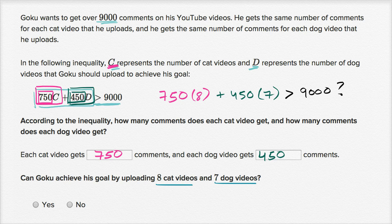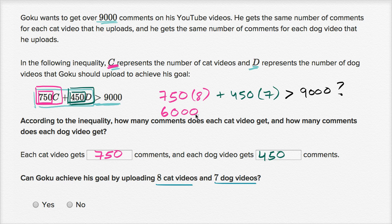Let's evaluate. 700 times eight is 5,600, plus another 50 times eight is 400. So 5,600 plus 400 is 6,000. So if he has eight cat videos and gets 750 comments per video, he's going to have a total of 6,000 comments on all eight cat videos combined.